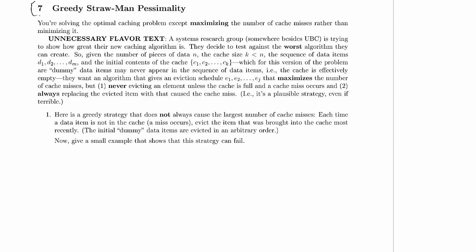So given the number of pieces of data N, and the cache size K, which is less than N, so we can't store all of the data in cache at once. And a sequence of data items d1, d2, etc., up to dm. There's m data items being given.